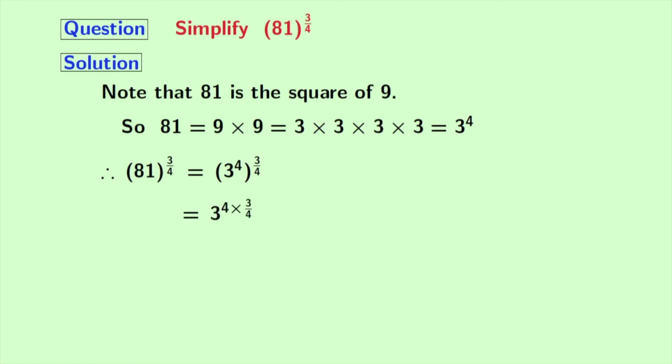Which is equal to 3 power 4 times 3 by 4. Here, we have used this rule of indices which is a power m whole power n is equal to a power m times n. Here, a is 3, m is 4, n is 3 by 4.